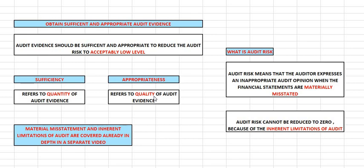So audit evidence should be sufficient — there should be lots of quantity — and quality should also be appropriate. Audit evidence should be sufficient and appropriate to reduce audit risk to an acceptably low level.